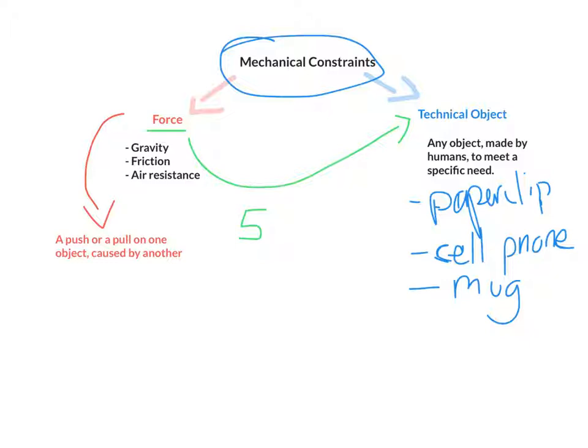Define each one, and talk about some examples of them. So when we're talking about mechanical constraints, there are five key forces: compression, tension, torsion, deflection, and shearing.